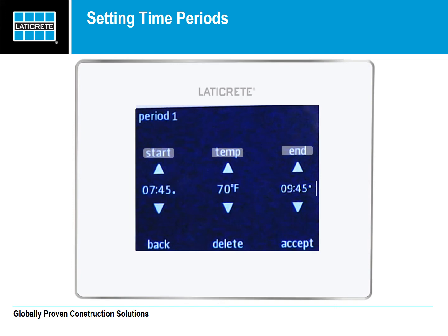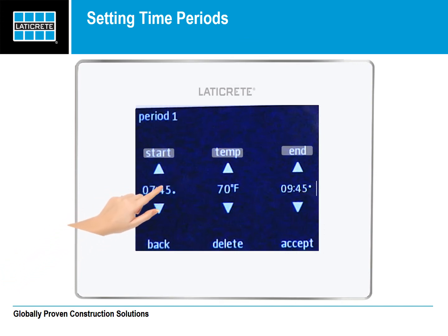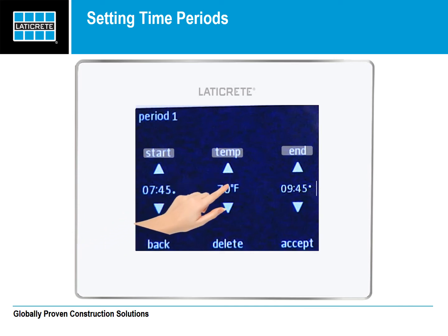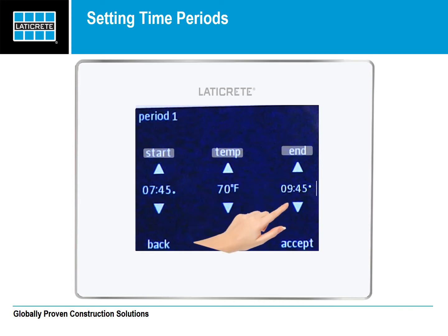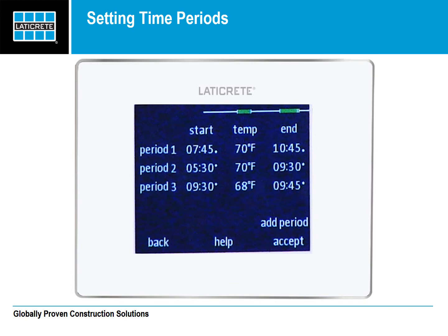In this example, the dot at the bottom right of the time indicates this is an AM time. If the dot is on the top right of the time, it is the PM time. Adjust the time you want the heating system to start to your preference. Next, set the temperature that you would like the StrataHeat to be at that time. Next, set the time to end the heating cycle. Press Accept to set the period. Your period is now complete.